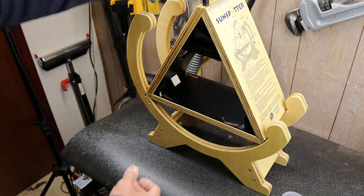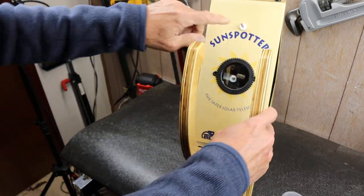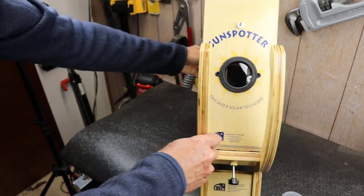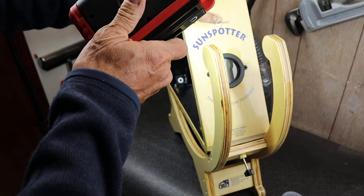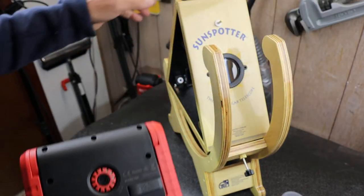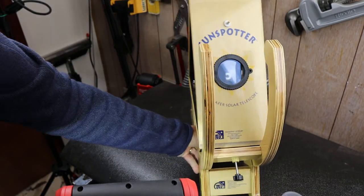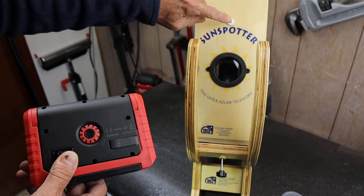So once you've got it set up you use this gnomon here. And I'll simulate this with the light. This casts a shadow. You see that there's a shadow. So you line it up until there is no shadow. And when there's no shadow this is pointing straight at the sun.